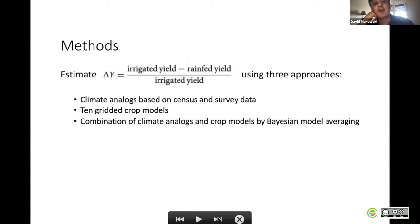First approach is based on climate analogues, based on census and survey data. The second approach is based on 10 gridded crop models at the global scale. The third approach is a combination of the two previous approaches, a combination of climate analogues and crop models outputs using a Bayesian averaging technique.